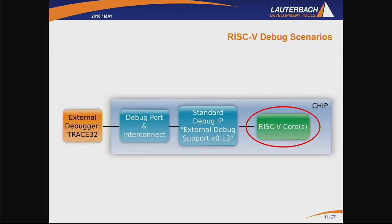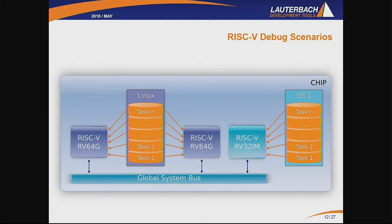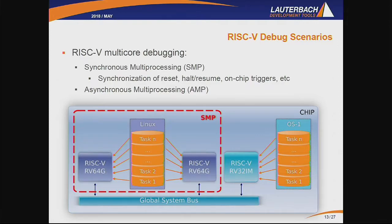Let's jump back from the interconnection and go more into the RISC-V core context. In this example, we have three RISC-V cores. There is a Linux operating system mapped to two identical RISC-V cores on the left, and then a second operating system mapped to a third RISC-V core. Obviously, if you want to debug this, you need multi-core debugging. More particularly, you may want to debug the two cores running Linux in a synchronous multiprocessing session — meaning you want synchronous reset, synchronous hold, synchronous on-chip triggers, etc.